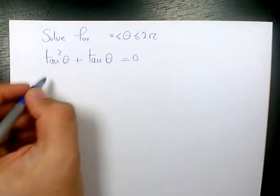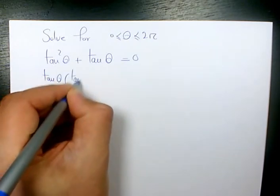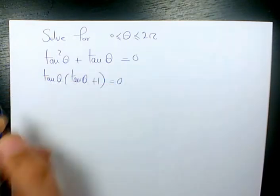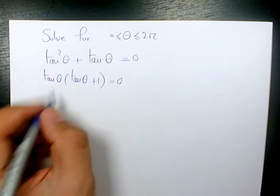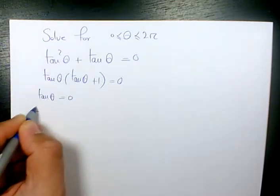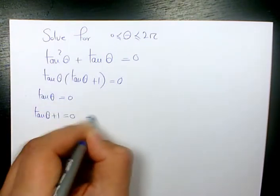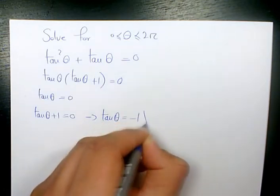So the first thing I want to do, I need to factor tan theta. When I factor tan theta, it's going to be tan theta times tan theta plus 1 equals 0. And then if we have tan theta equals 0 and tan theta plus 1 equals 0, which means that tan theta equals negative 1.